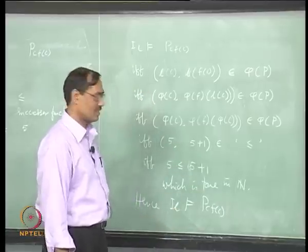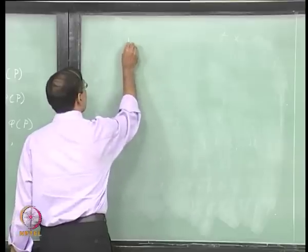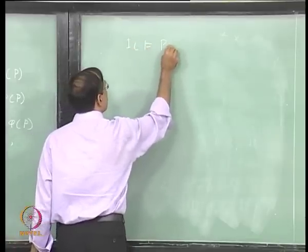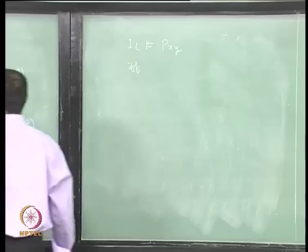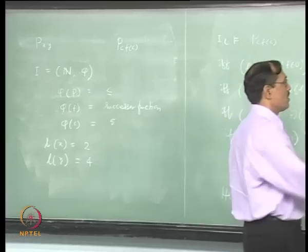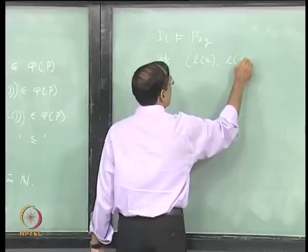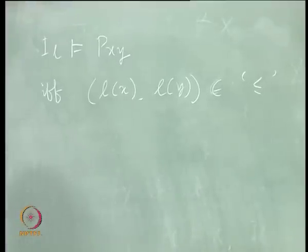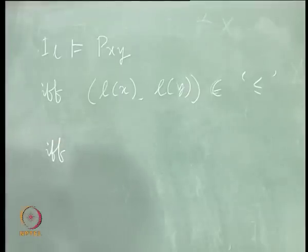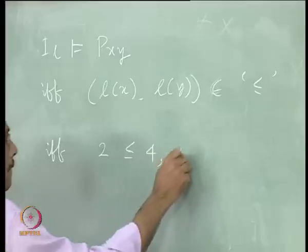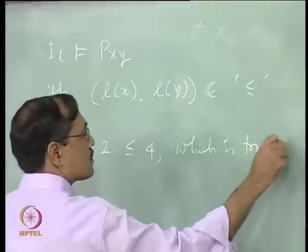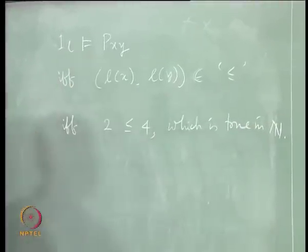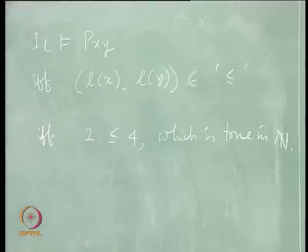Looking informally at a concrete example: c is interpreted as 5, f(c) is interpreted as 5+1 (successor of 5). P is less-than-or-equal-to, so 5 ≤ 5+1. That is all. But to go through it formally, we have to follow these recursive steps. What about the other formula P(x, y)? Similarly, (I, l) satisfies P(x, y) if and only if (l(x), l(y)) belongs to less-than-or-equal-to. If l(x) is 2, then 2 ≤ 4 is true in ℕ. That is how we proceed, and we will take some more examples later.